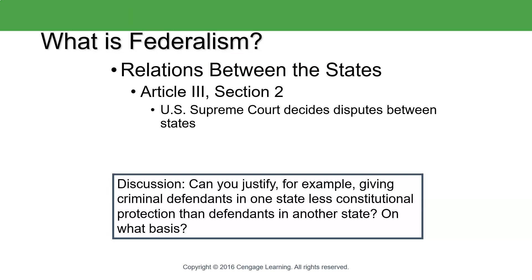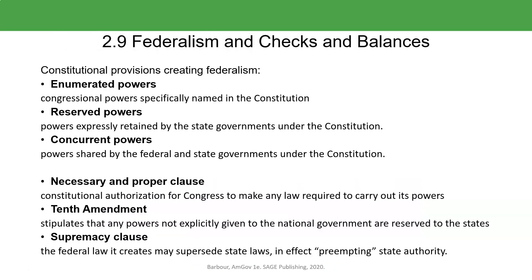When there are disputes between the states and the federal government — which happen frequently because the states want what they want and the federal government doesn't always give each individual state what they want — the Supreme Court gets to decide on disputes between the states and the federal government, as well as disputes between states, under Article 3, Section 2 of the Constitution. The powers granted to the federal government are called enumerated powers.